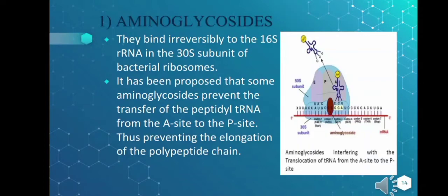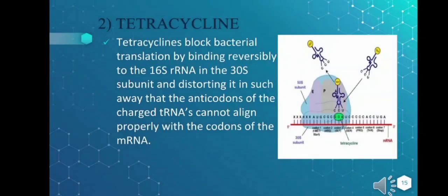The first translation inhibitor is aminoglycosides, which bind irreversibly to the 16S rRNA in the 30S subunit of the bacterial ribosome. It has been proposed that some aminoglycosides prevent the transfer of peptidyl-tRNA from the A site of the ribosome to the P site of the ribosome, thus preventing the elongation of the growing polypeptide chain.